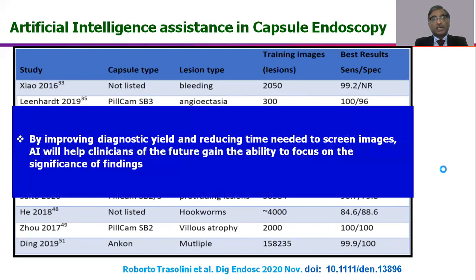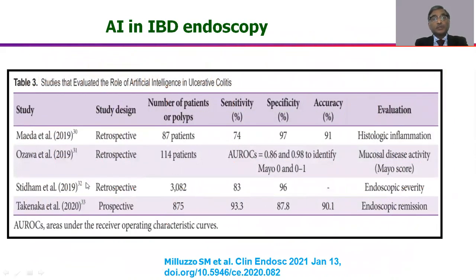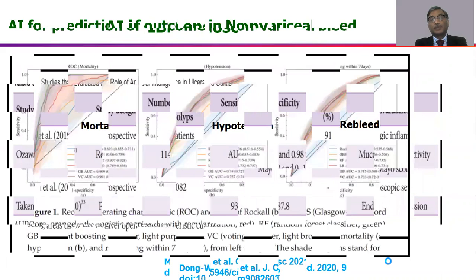AI has also found application in IBD-related endoscopy for detection of disease activity, detection of Crohn's lesions, prediction of remission, and prediction of mucosal healing. For histologic inflammation, accuracy was 91%; for endoscopic Mayo score, sensitivity and specificity were also strong; and for endoscopic severity and endoscopic remission, pretty high sensitivity and specificity were achieved.